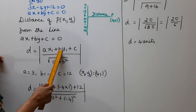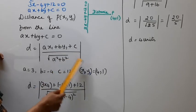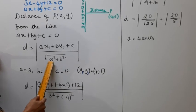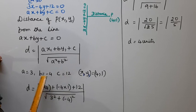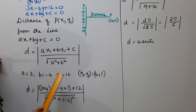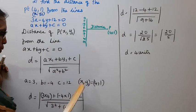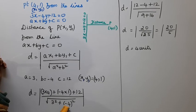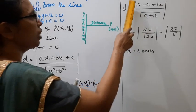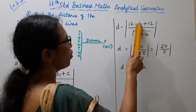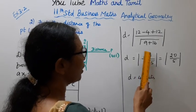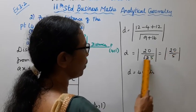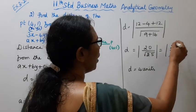x1, y1, 1 plus c, 12 divided by root of a square, a is 3 squared plus b square, b minus 4 square. 3 into 4 is 12, minus 4 into 1 is minus 4, plus 12 divided by root of 3 squared is 9 plus minus 4 squared is 16. 9 plus 16, modulus 12 plus 12 is 24, 24 minus 4 is 20, modulus of 20 by root of 9 plus 16 is root 25. Modulus of 20 by root 25 is 5. 5 into 4 is 20.